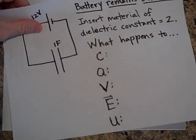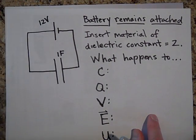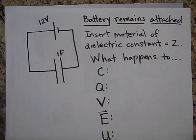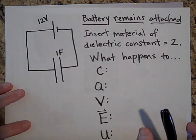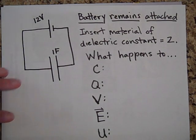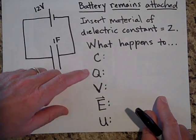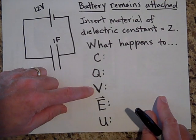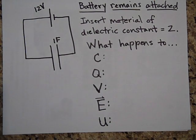We have a 12-volt battery connected to a one-farad capacitor. The battery is going to remain attached to the circuit the entire time, and we're going to insert a material — an insulator that has a dielectric constant of two, so k equals two. What happens to all these quantities: the capacitance, the charge, the voltage across the capacitor, the electric field between the plates, and the energy stored?